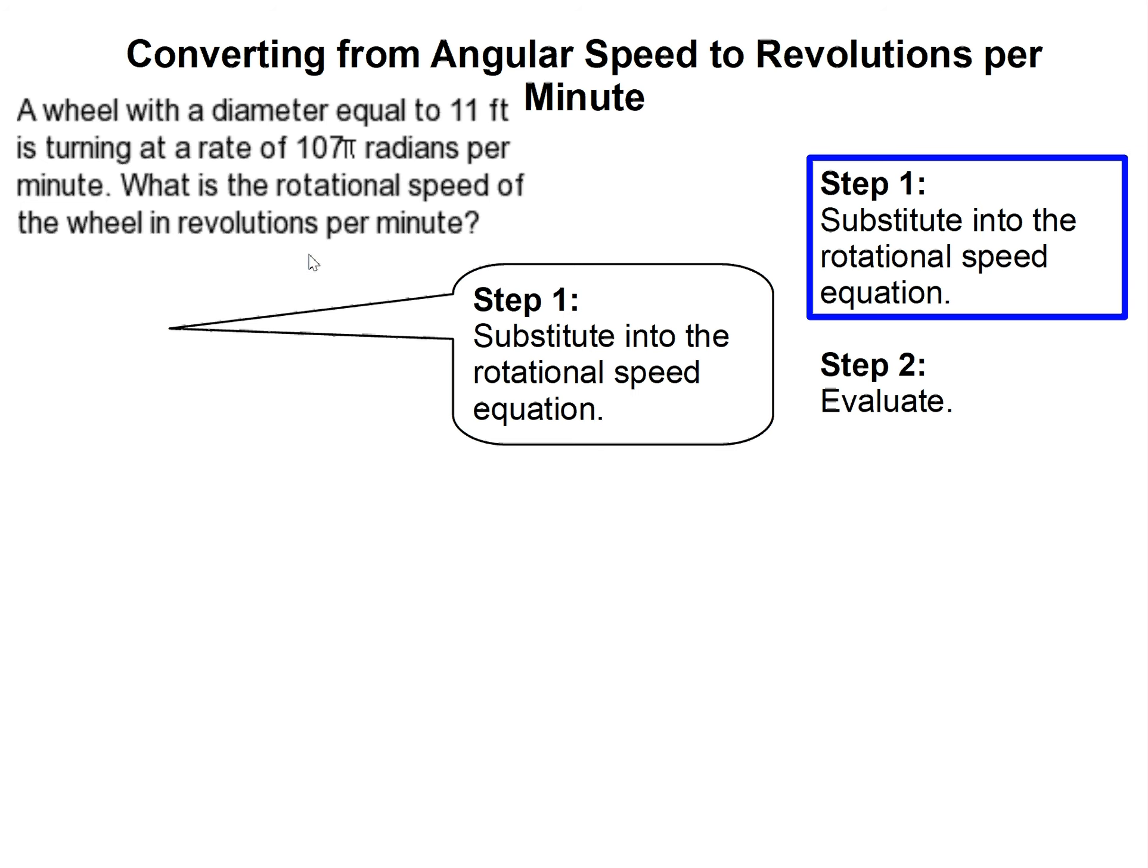Okay, so the first thing we want to do is substitute into the rotational speed equation, which is here. And notice, this v is for velocity. Most physics teachers and math books will have a v for velocity, because velocity is just speed with a direction. And since it is changing directions, technically that is a little better, but many math teachers and math books will say we'll just use speed.